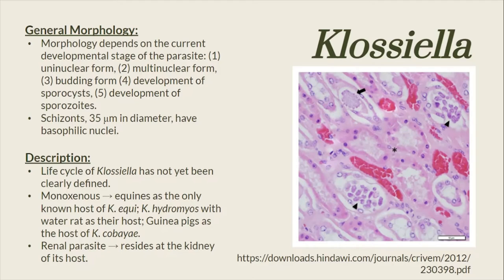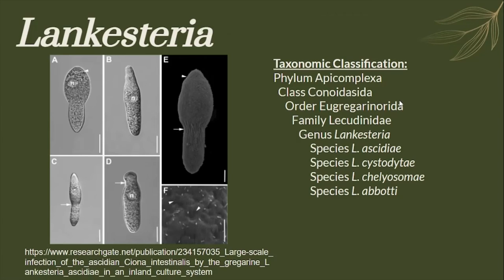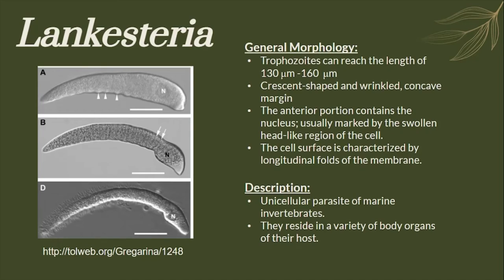For the genus Lancasteria, here is the taxonomic classification. Lancasteria is a genus of unicellular parasites of marine invertebrates and they reside in a variety of body organs of their host. Trophozoites can reach a length of 130 to 160 micrometers. They are crescent-shaped and wrinkled with a concave margin. The anterior portion contains the nucleus and is usually marked by the swollen head-like region of the cell. The cell surface is characterized by longitudinal folds of the membrane.